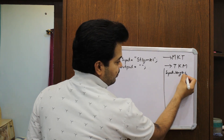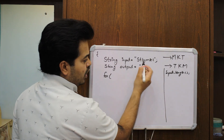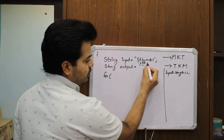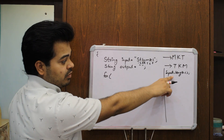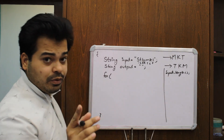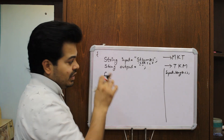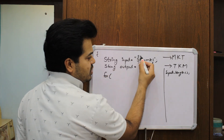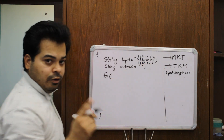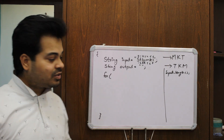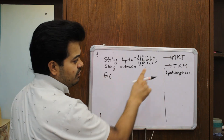To write the for loop I'll use a string function: `input.length()`. If your input is 'stbymkd', the output of `input.length()` will be 7 — one, two, three, four, five, six, seven. But in a string it actually starts with index zero: 0, 1, 2, 3, 4, 5, and 6. So `input.length()` gives you 7, which is the length of this particular input.